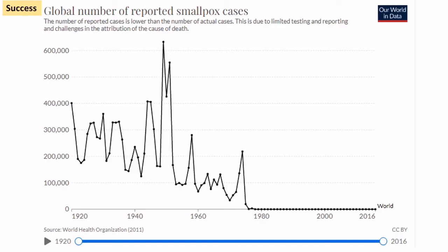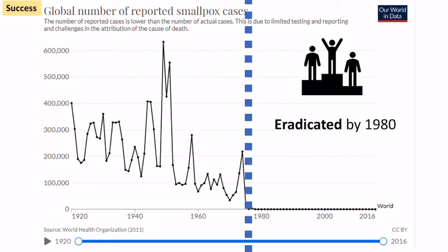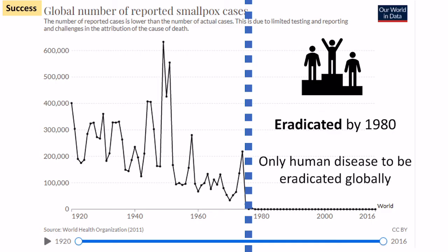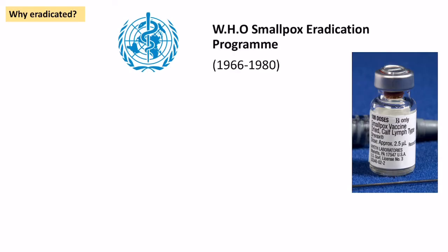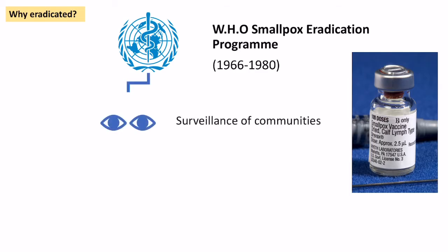Since the 1980s, smallpox is a disease that we've actually eradicated — it's the only human disease to have been eradicated by global institutions. Beyond 1980, reported smallpox cases have been at zero. This was largely led by WHO, the World Health Organisation, who ran the smallpox eradication programme between 1966 and 1980.